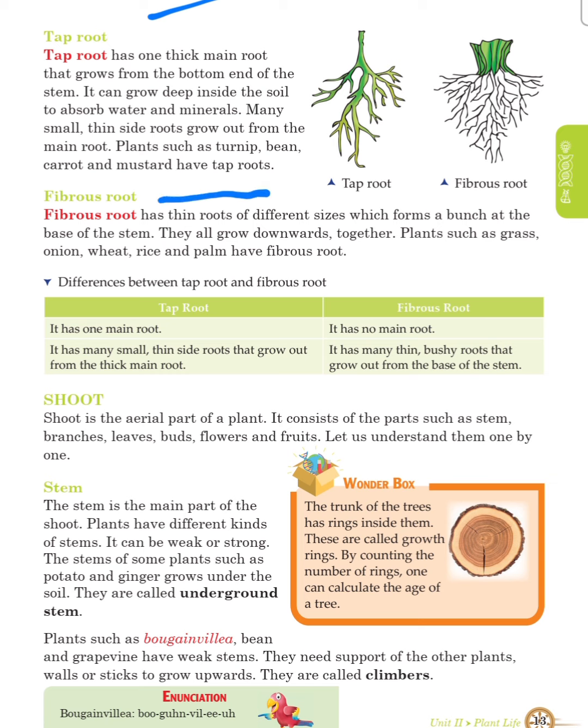Fibrous root has thin roots of different sizes which form a bunch at the base of the stem. They all grow downwards together. Plants such as grass, onion, wheat, rice and palm have fibrous roots.